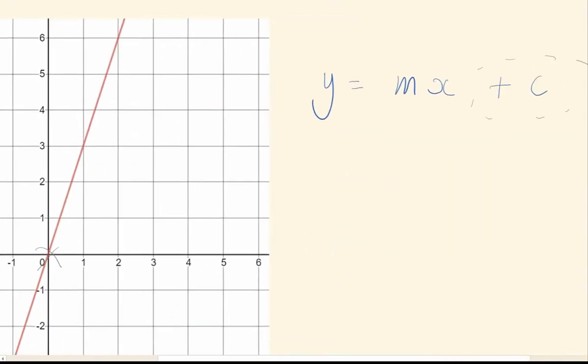Then we need the gradient. You can basically define the gradient as, if you go 1 square across, how many squares up do you go? So here I go 1 square across, and I go 3 squares up. So this equation would be y equals 3x, or redundantly, y equals 3x plus 0.